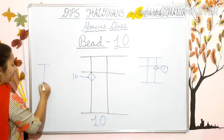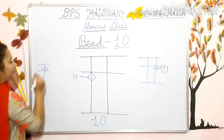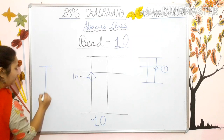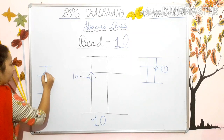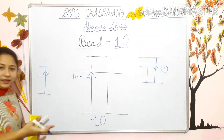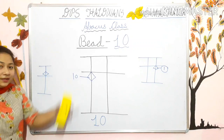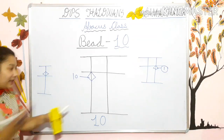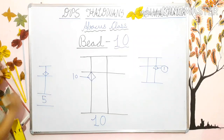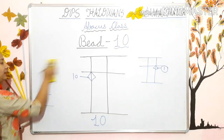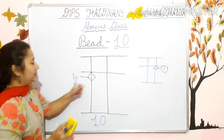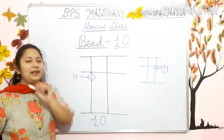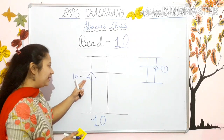The bead which goes above the line — jho bead line ke oopar chali jati hai — wo badi ho jati hai, it becomes big, and it is five. So this is bead five. Same way, the bead which is in the second line — jho bead second line mein hoti hai — that is bead ten.